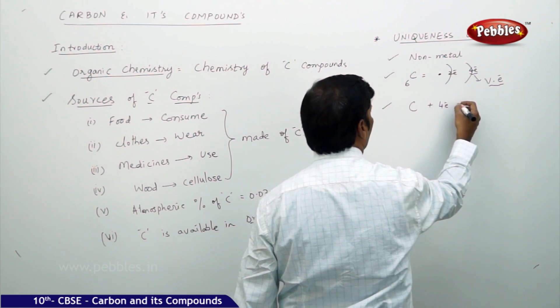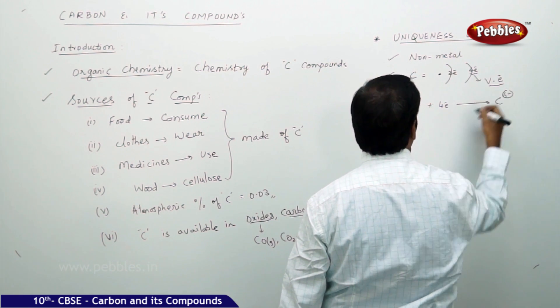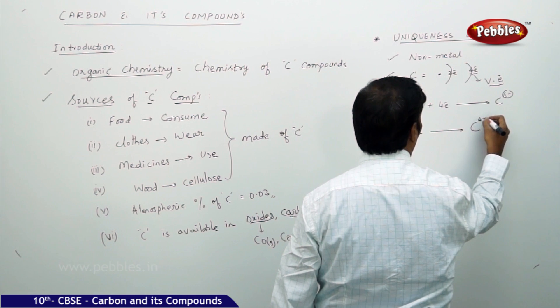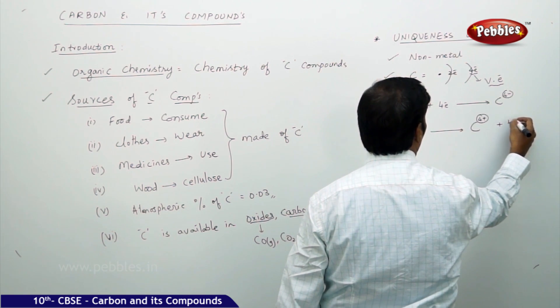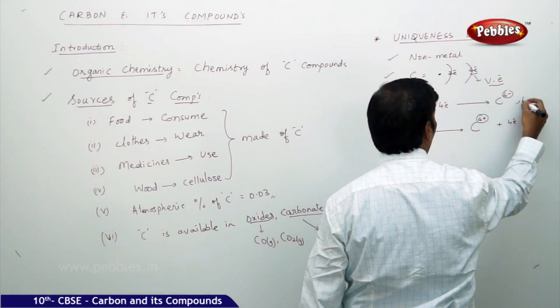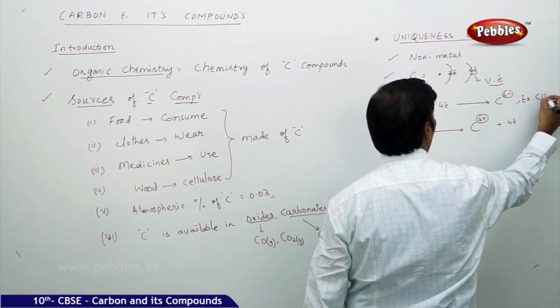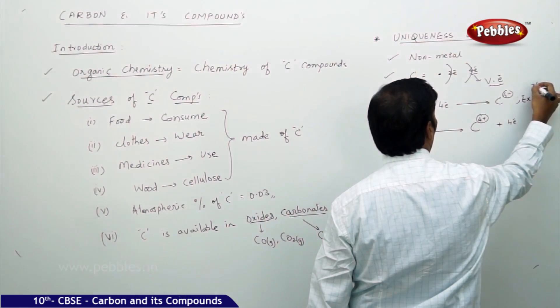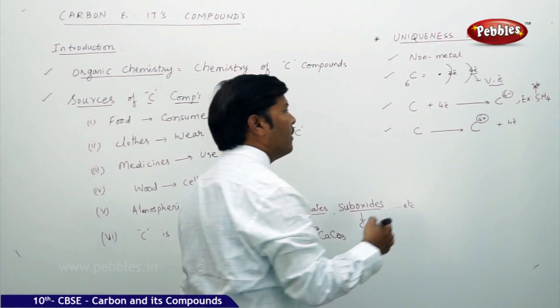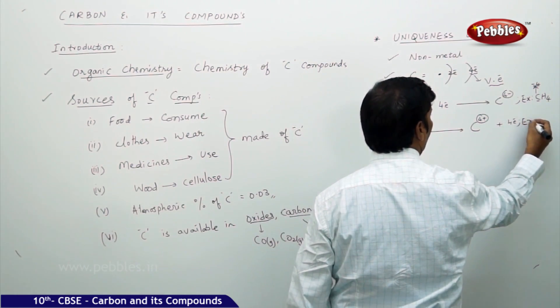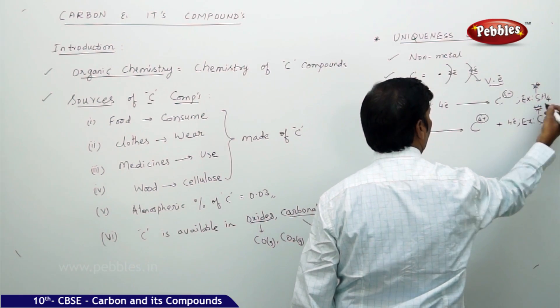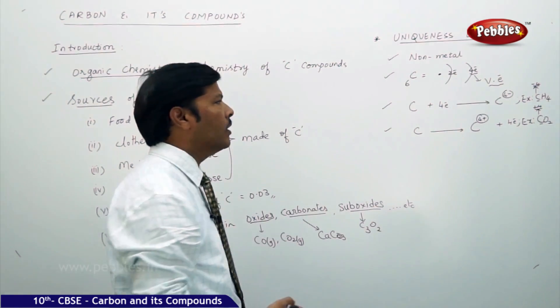Because of these 4 valence electrons, carbon will gain 4 electrons and form C4− or lose 4 electrons and form C4+. For example, methane has carbon with −4 oxidation state. Carbon dioxide has carbon with +4 oxidation state. That means carbon is available in both forms.